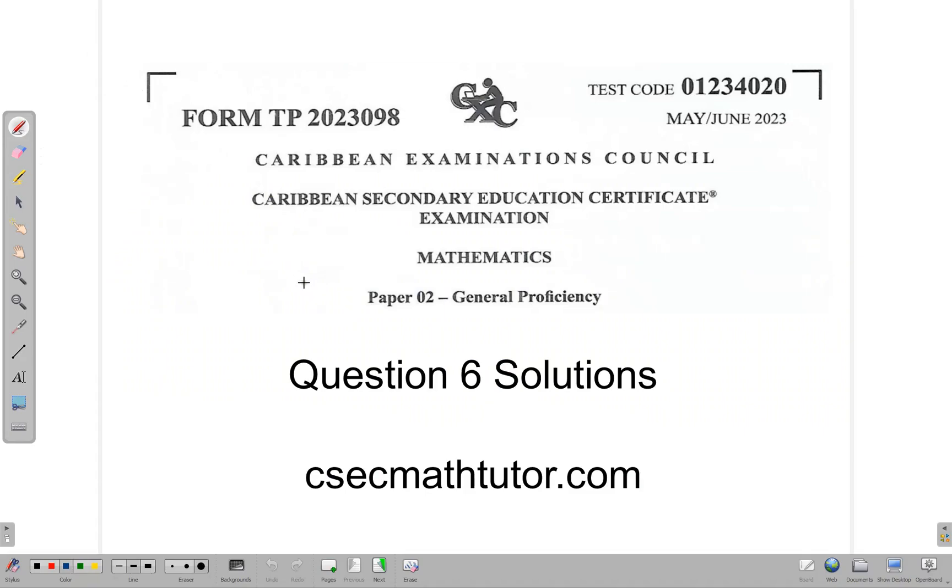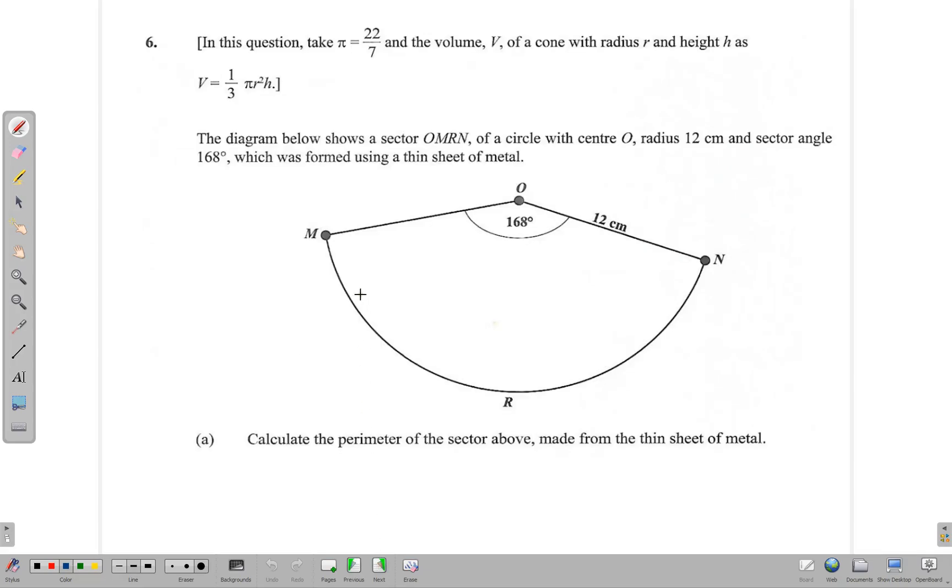Hello and welcome. Thank you for joining us. We'll go through the solution for question 6 of the May-June 2023 CSEC Mathematics Paper 2. We begin with the question. It says in this question, take π as 22/7, the volume V of a cone with radius r and height h.